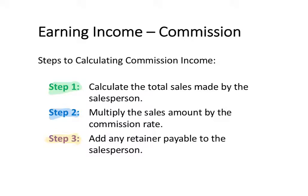The last step in calculating someone's commission income is adding on any retainer that is payable to that salesperson in addition to the commissions they are receiving. Once you have added those two amounts together, you're going to have someone's total earnings based on a commission.